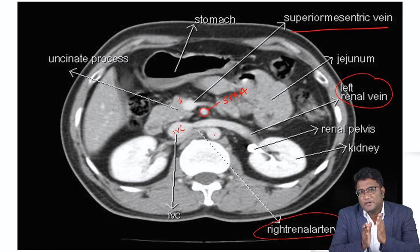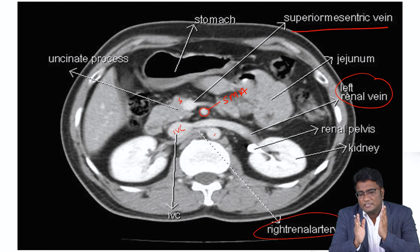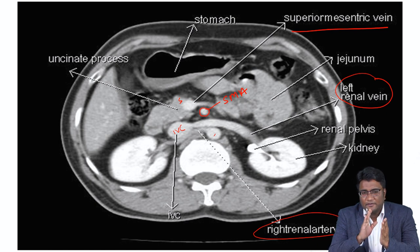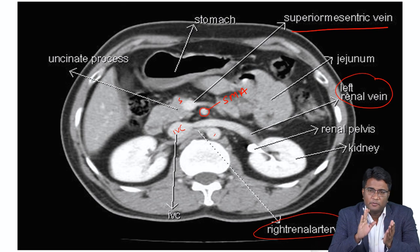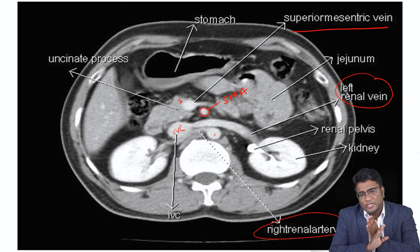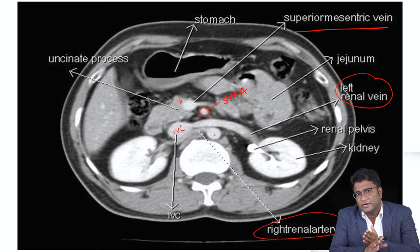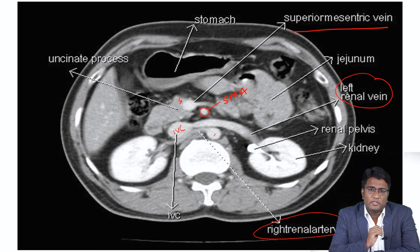The superior mesenteric artery normally lies to the left of the superior mesenteric vein. If there is a malrotation of the gut — if there is midgut volvulus or malrotation — you may have these vessels changing their position. The superior mesenteric artery may come to the right and the superior mesenteric vein may go to the left in cases of malrotation.